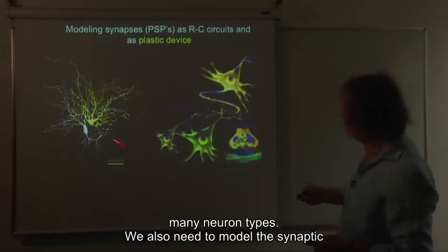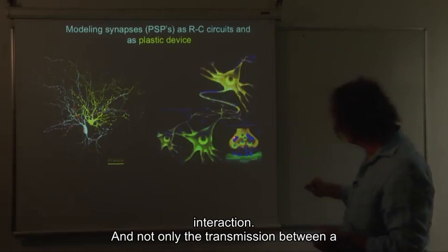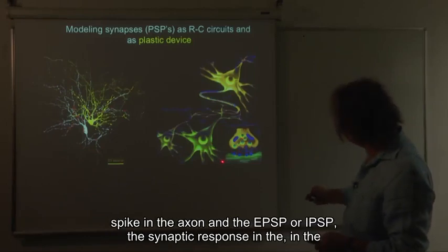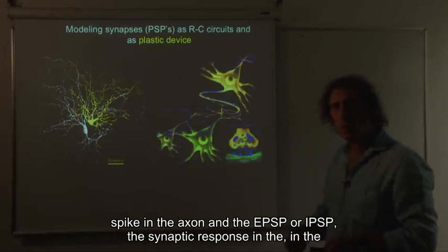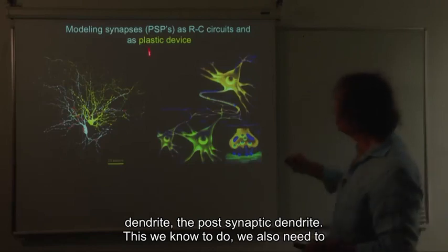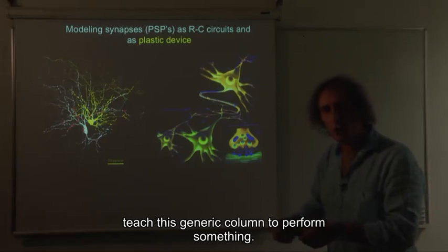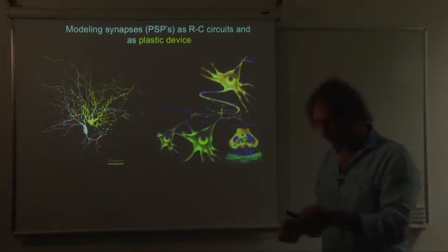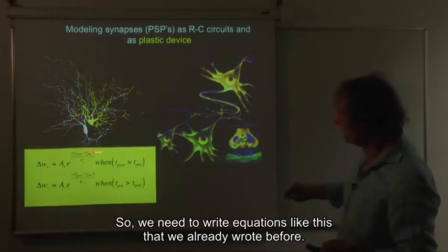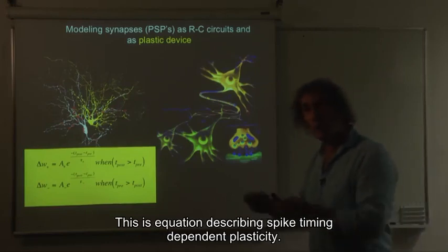We also need to model the synaptic interaction. And not only the transmission between a spike in the axon and the EPSP or IPSP, the synaptic response in the dendrite, the post-synaptic dendrite, this we know to do. We also need to mathematically write down the plasticity rules, because eventually we want to teach this generic column to perform something. So we need to write equations like this that we already wrote before.